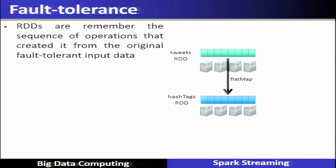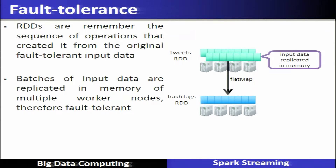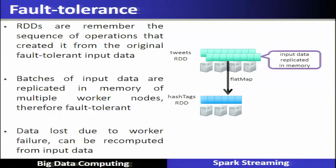Let us now discuss fault tolerance. RDDs remember the sequence of operations that created them from the original fault-tolerant data. Using lineage, RDDs know the sequence of operations from the original source. When batches of input data are replicated in the memory of multiple worker nodes, fault tolerance is achieved. If data is lost due to worker failure, it can be recomputed using lineage from the input pipeline.